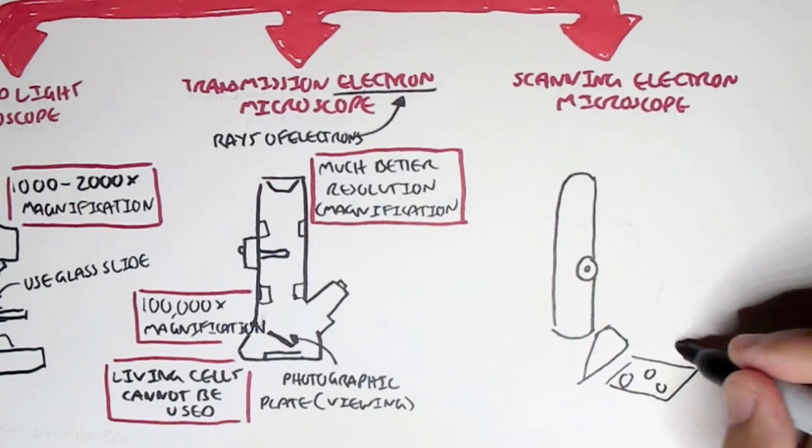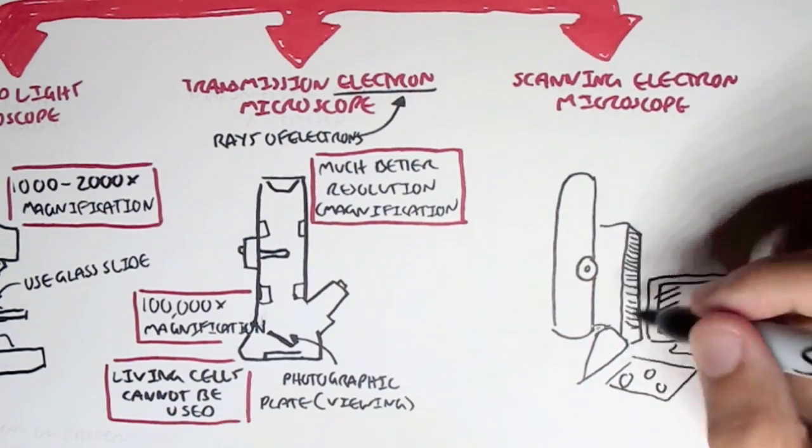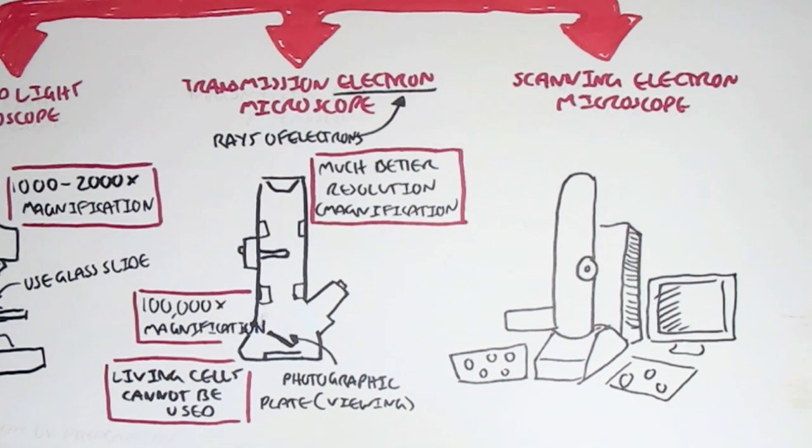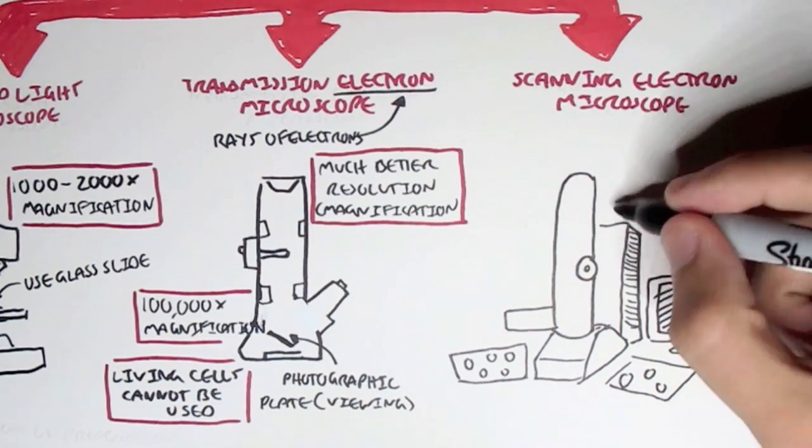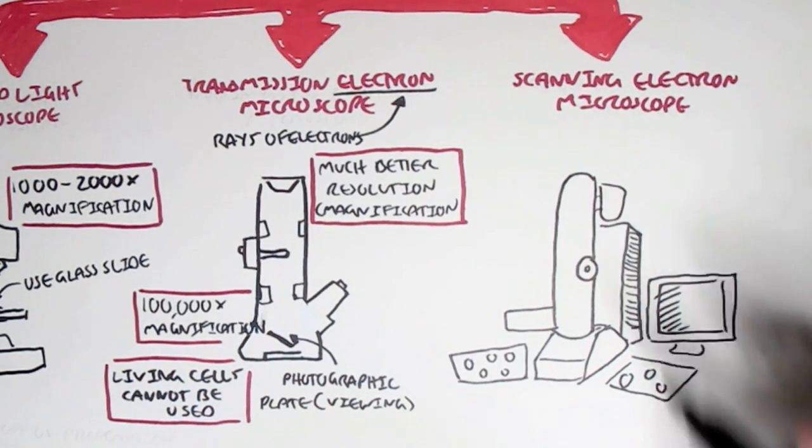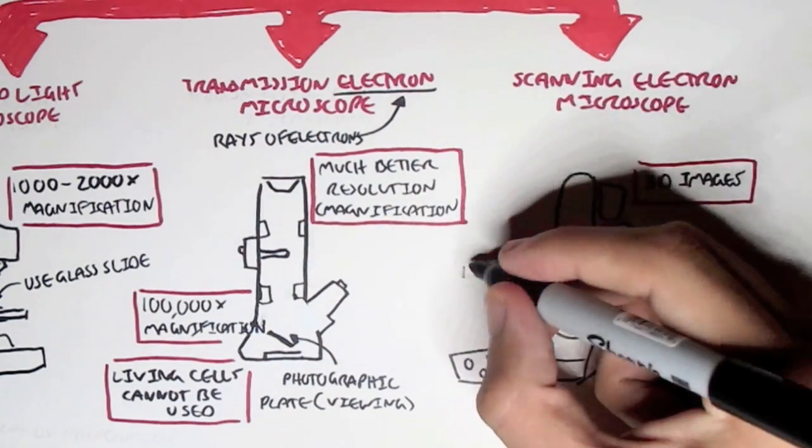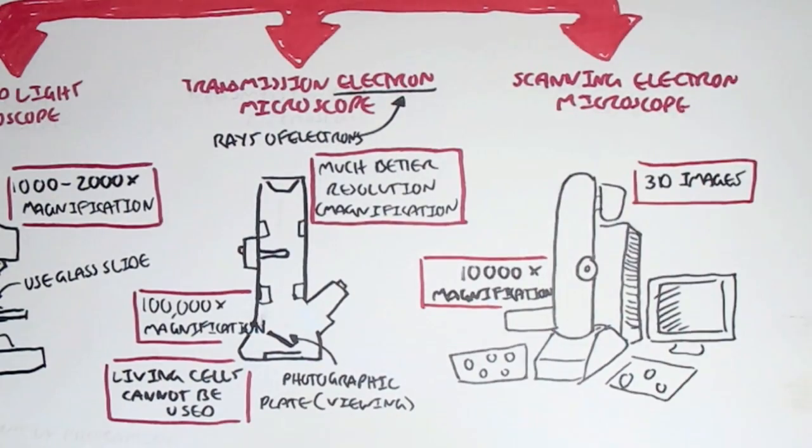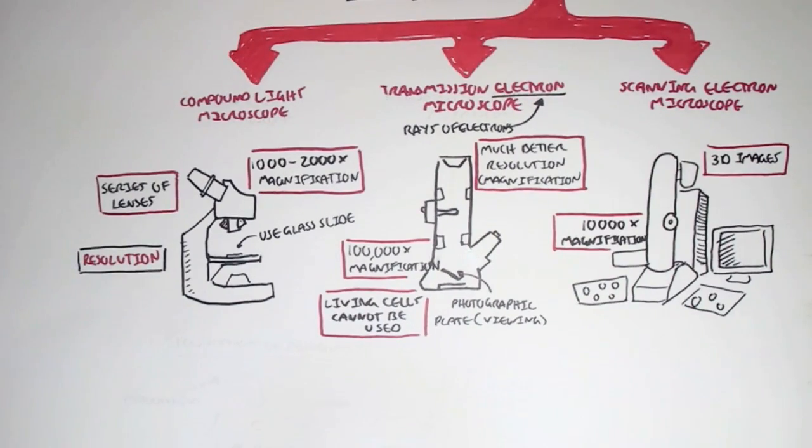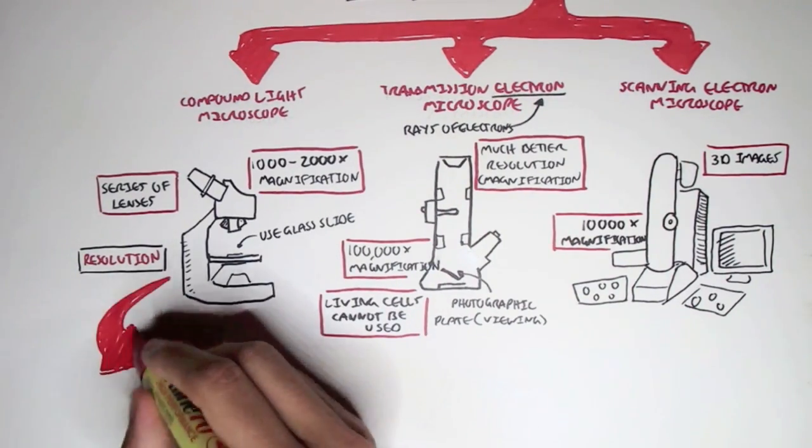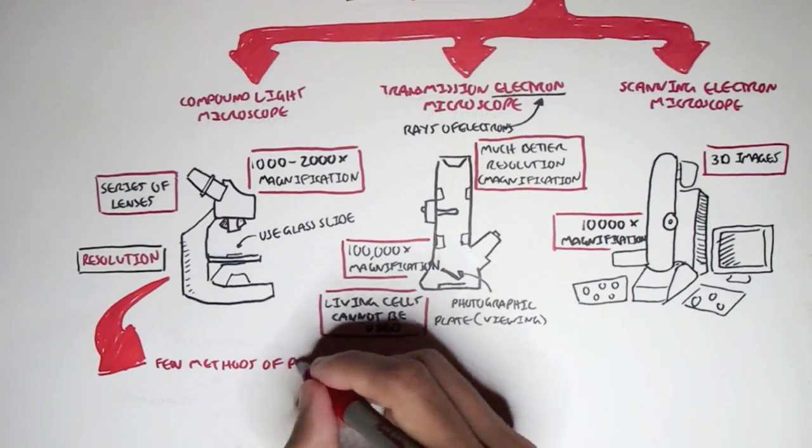And the final one is a Scanning Electron Microscope, and this is probably the coolest microscope ever, because it enables scientists to view these microorganisms in 3D. And it only can magnify up to 10,000. However, the detail of these microorganisms in three dimensions is awesome.